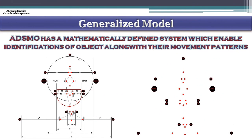A generalized clustering system was developed to define sensor assemblies or sampling points arrangement for object detection, which also enables determination of the direction of movement, velocity, and acceleration of the object that comes in proximity of the sensor assembly. Lasers were used in the system.